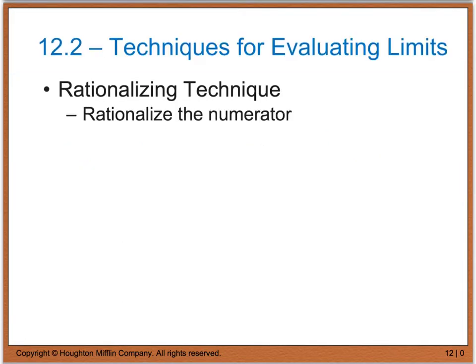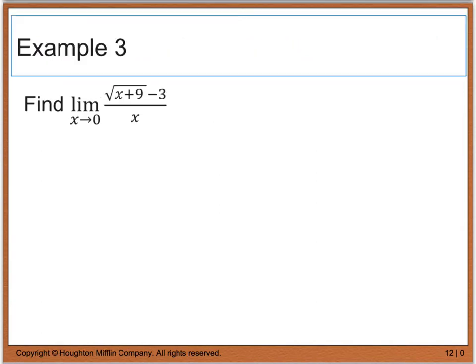Sometimes we're given problems where we have a radical involved. If we have a radical involved, we have to do what we call the rationalizing technique. And sometimes that means that we have to rationalize the numerator. So let's look at example 3, which says to find the limit as x approaches 0 of the square root of x plus 9 minus 3, divided by x.